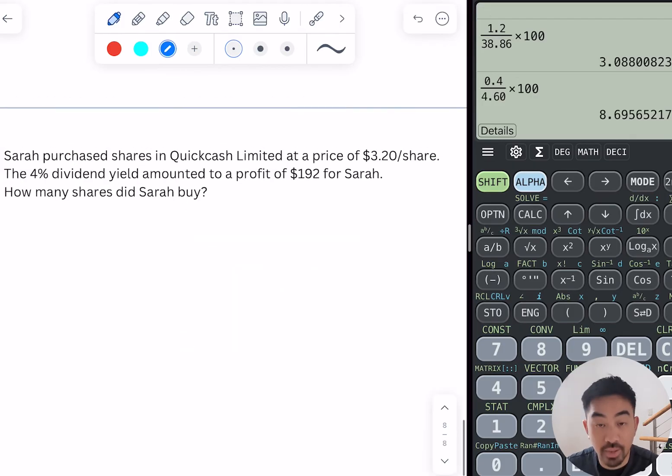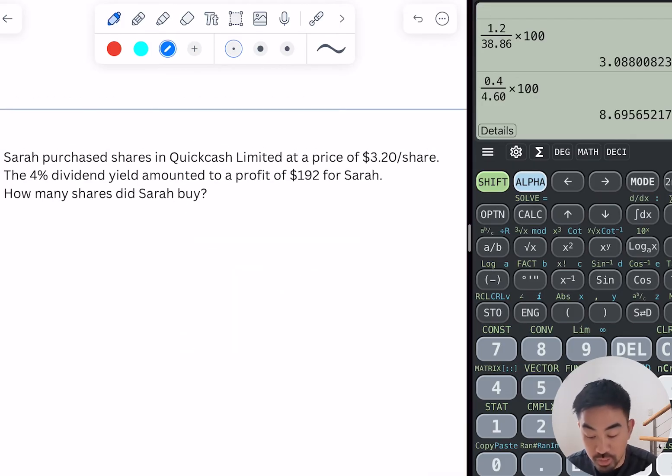Okay, cool. All right, last one here. Sarah purchased shares in Quickcash Limited at a price of $3.20 per share. The 4% dividend yield amounted to a profit of $192. How many shares did Sarah buy? Okay, so kind of a bit of a problem-solving question.